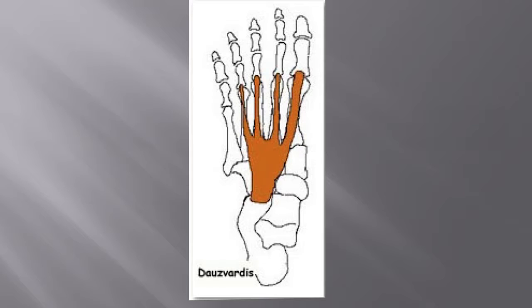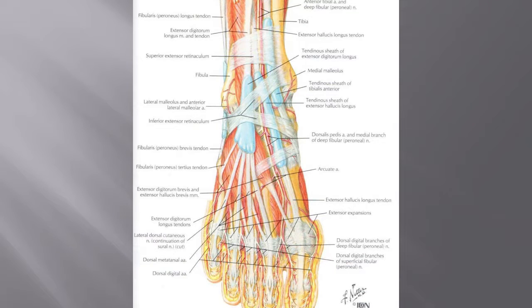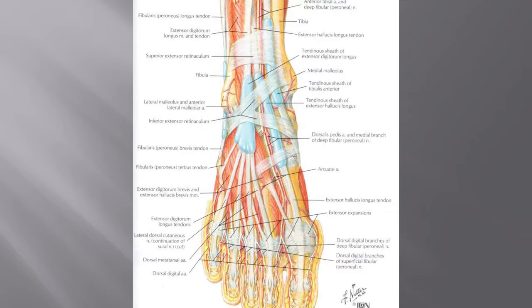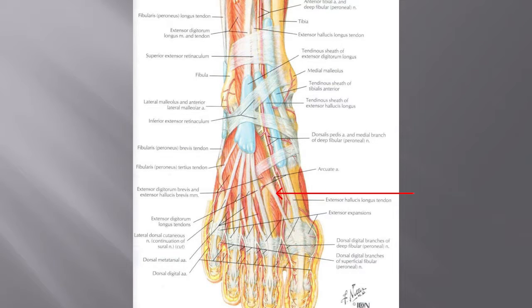The tendon of the big toe is given a special name: extensor hallucis brevis. This is a diagram from Netter's wonderful book on clinical anatomy showing the stem of the Y-shaped inferior extensor retinaculum, with some of the muscle of extensor digitorum brevis taking origin from its inferior surface. The muscle and tendons of extensor digitorum brevis pass deep to the tendons of extensor digitorum longus, showing the tendon of extensor hallucis brevis and the tendons of the second, third and fourth toes.